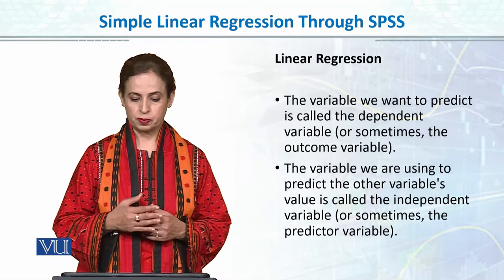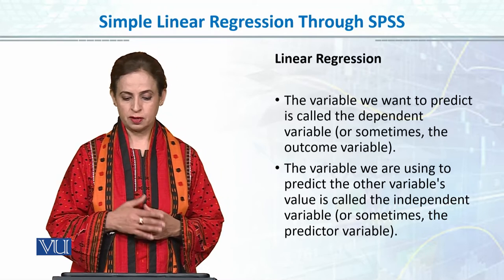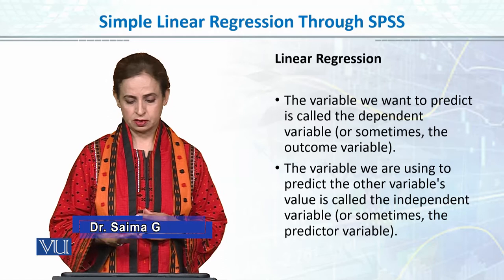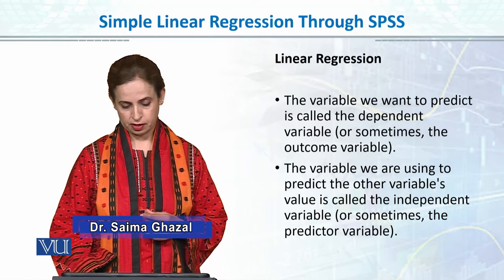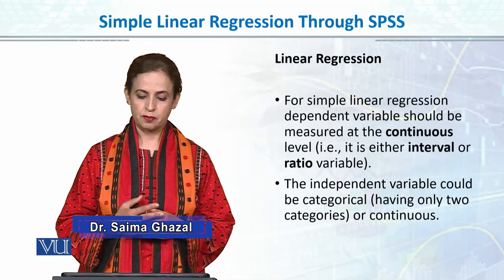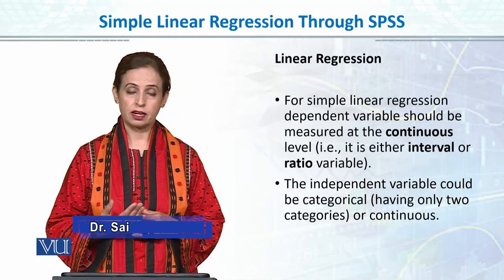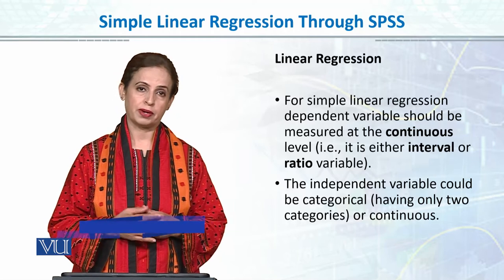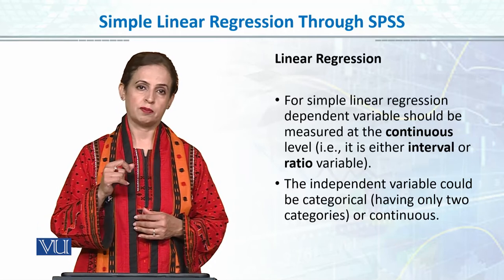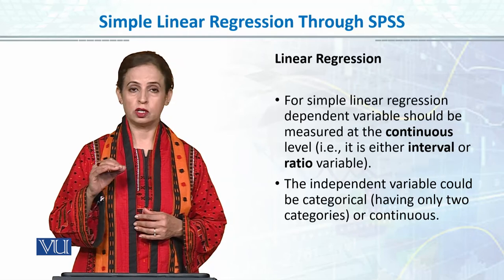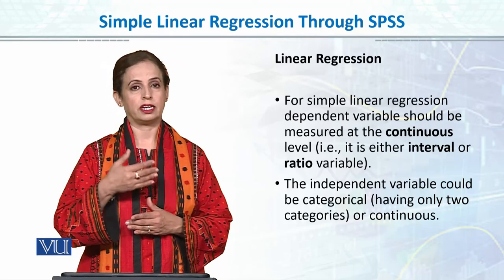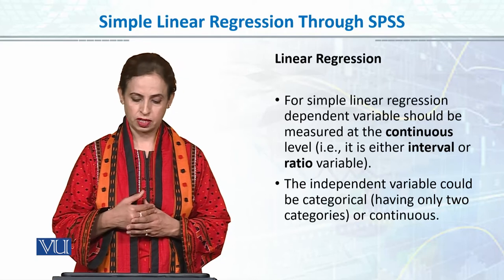The variable we want to predict is called the dependent variable, and the predictor is the independent variable. For simple linear regression, the dependent variable should be measured at the continuous level — it should be interval or ratio scale, continuous or quantitative, a running score.